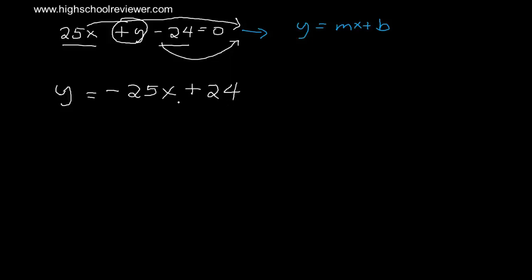The equation is already of the form y equals mx plus b, where m is negative 25 and b is positive 24. Since this is already of the form y equals mx plus b, this is now our final answer.